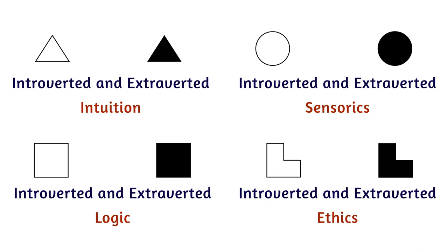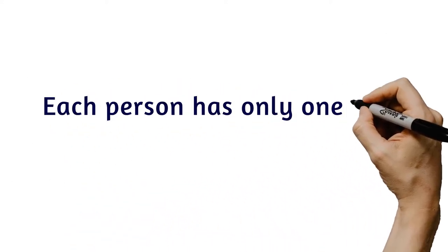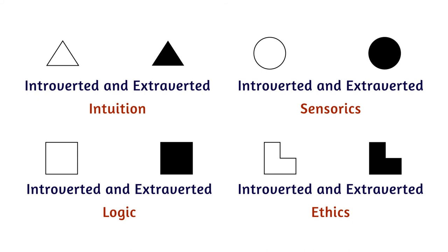The types are made of different positioning of the aspects in the type's model. Each position has a specific function. Each person has only one type, which means a person can't be partially of one type and partially of another, but all eight aspects are present in every type's model.